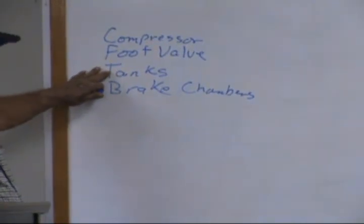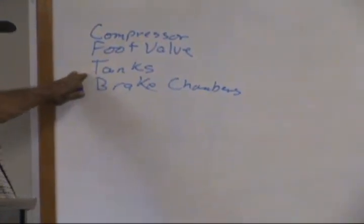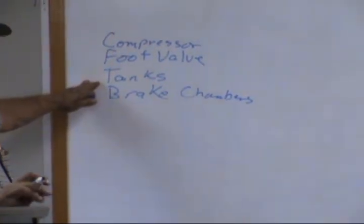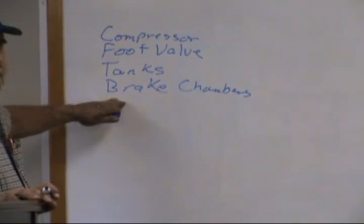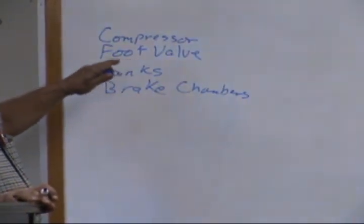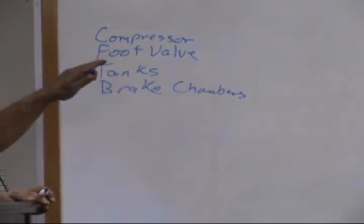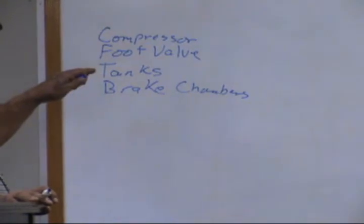You've got two tanks on the truck. You've got one that's primary and one that's secondary. The reason for that is your primary tank supplies all the air for your foot valve and your brake chambers. But if something goes wrong with the air system, you've got air in the secondary tank that will give you enough air to get it off the road, or get the truck stopped, or something of that nature in an emergency situation.